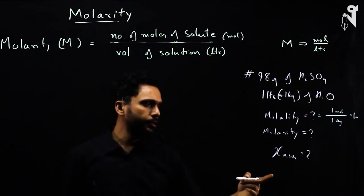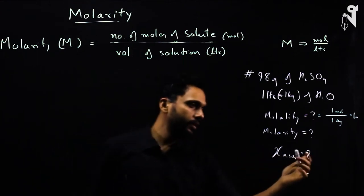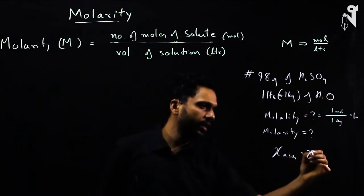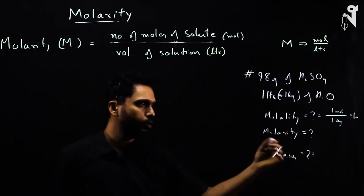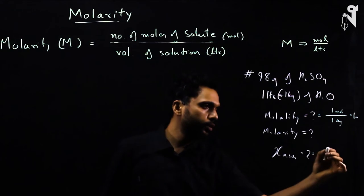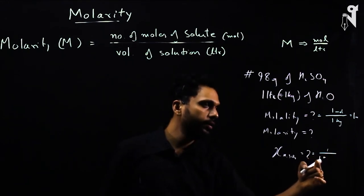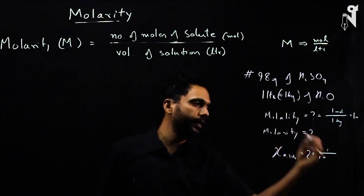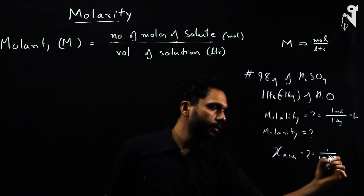For mole fraction, you don't need to convert to decimal - you can leave it in fractions. Moles of H₂SO₄ is 1, divided by total moles, which is moles of H₂SO₄ (1) plus moles of water. Water was 1 kg, that is 1000 grams, so you have 1000/18 moles of water.